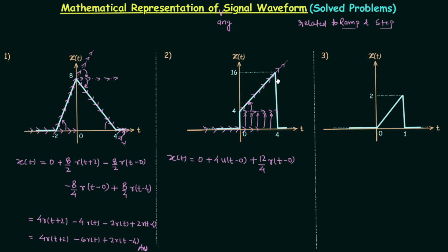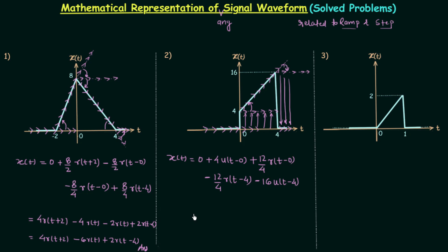The signal then takes a downward turn, but again we need to settle to a constant value — the level 16. For downward turn we have a negative sign, and since this angle is the same as this angle, the slope remains 12 by 4. So we have -12/4 · r(t-4) because the downward turn occurs at t equals 4. The signal then has a downward level switching, and for downward level switching we have a negative sign. The magnitude of the level switching is 16, so we have -16u(t-4). Now it is your task to simplify this and obtain the final mathematical representation of signal x(t).